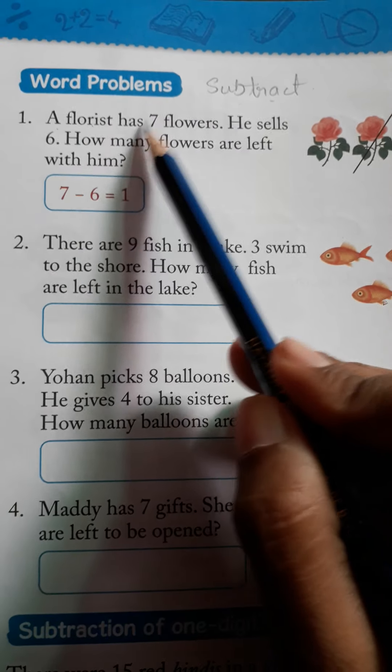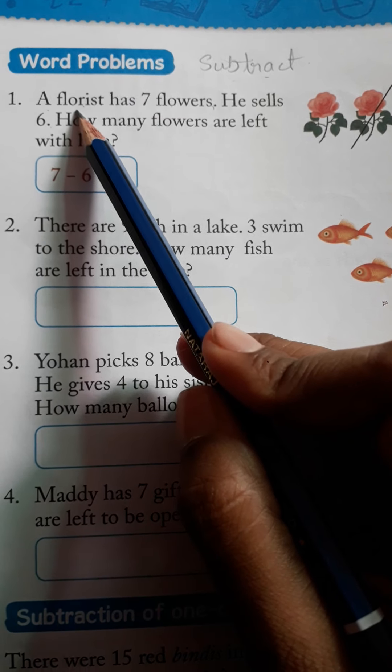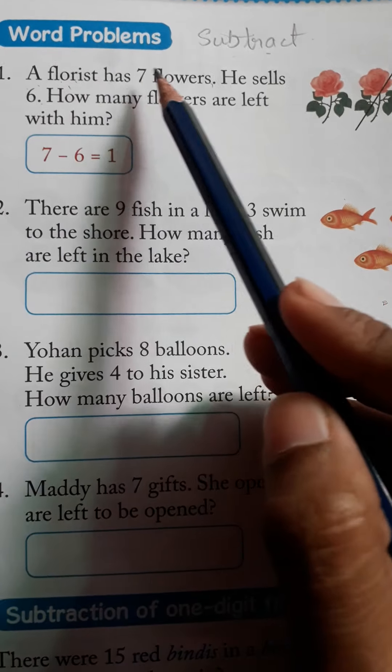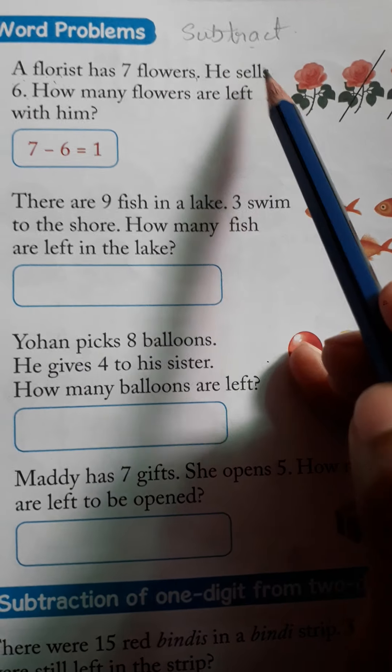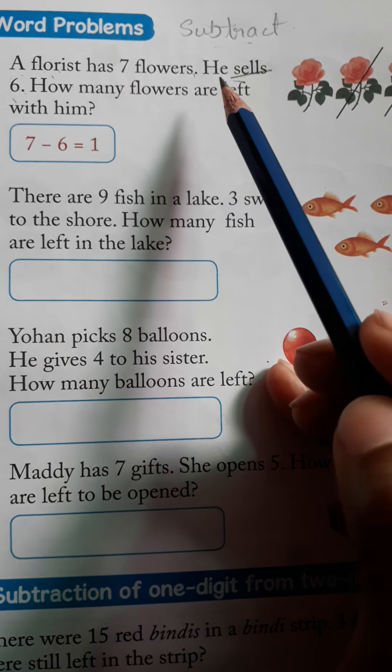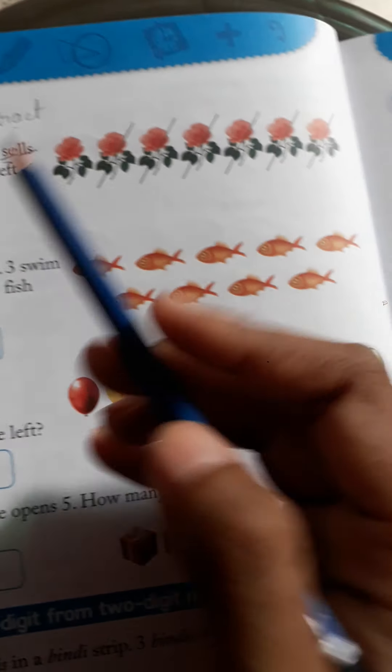Now see, a florist has 7 flowers. You know the meaning of florist - it means someone who sells flowers. A florist has 7 flowers. He sells 6. How many flowers are left with him?